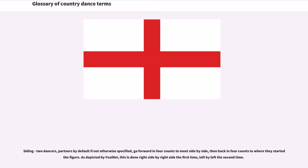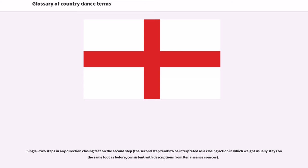Siding: Two dancers — partners by default if not otherwise specified — go forward in four counts to meet side by side, then back in four counts to where they started. As depicted by Faye, this is done right side by right side the first time, left by left the second time. Single: Two steps in any direction, closing feet on the second step. The second step tends to be interpreted as a closing action in which weight usually stays on the same foot as before, consistent with descriptions from Renaissance sources.